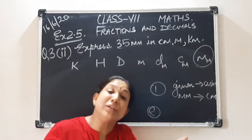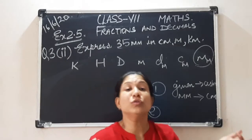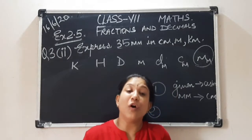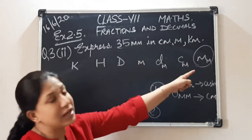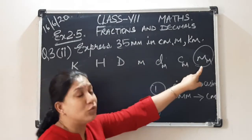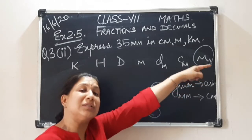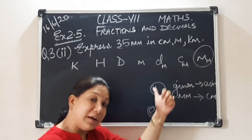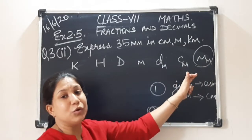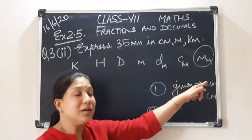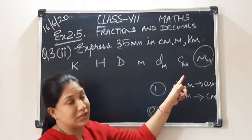So from millimeter we will start because it is given in millimeter. How you solve any problem? From what it is given, correct. So here it is given in millimeters. When we move from the unit towards the left hand side, we divide it and when we move towards the right hand side, we multiply. Correct. This is how we get the unit scale.